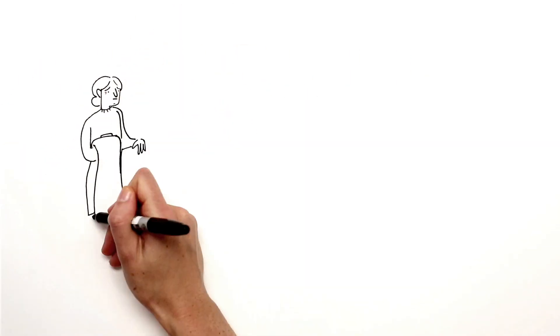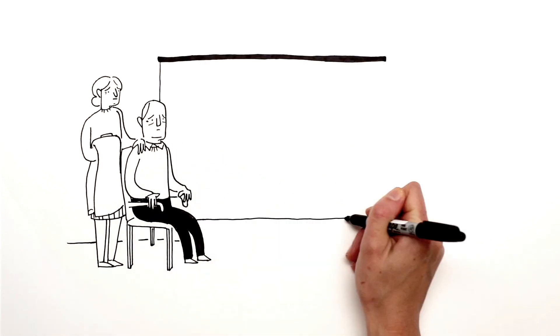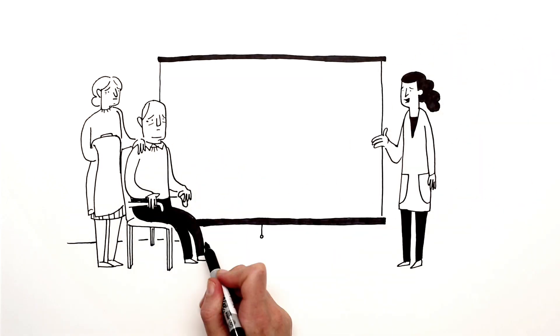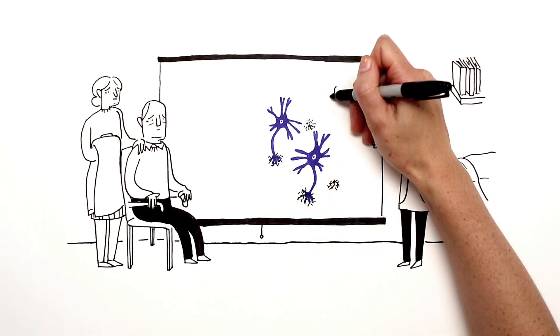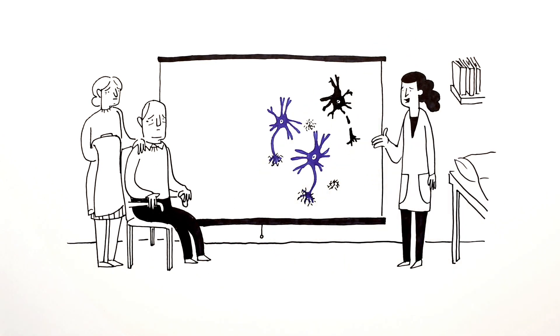Amyloid plaques are abnormal clusters of chemically sticky proteins called beta amyloids. Small clumps can build up in between neurons, interfering with their ability to communicate and ultimately contributing to their decay and death.